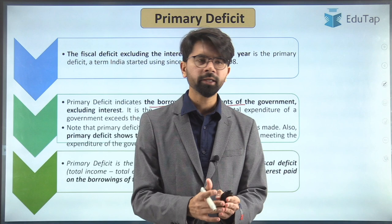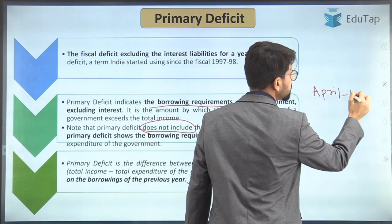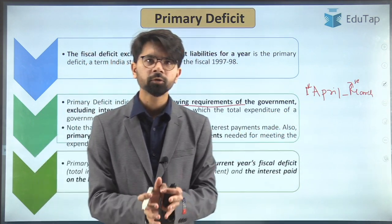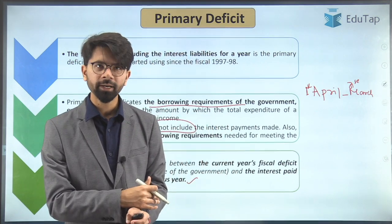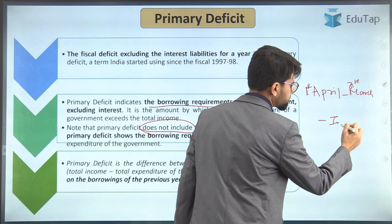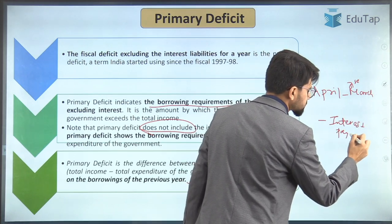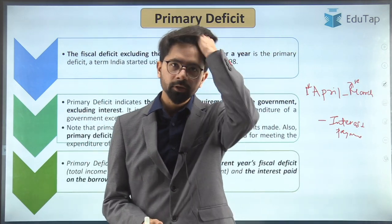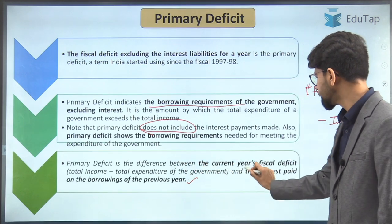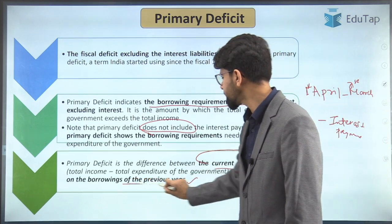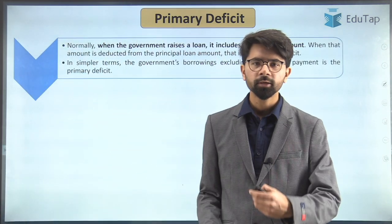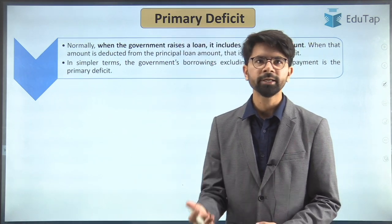The government resorts to borrowing in each financial year, which runs from 1st April to 31st March. In the upcoming year the government will resort to borrowing — that is the fiscal deficit — but borrowings might have been made in the previous year also. Whenever you borrow, you have to return the principal amount as well as the interest. That interest payment is excluded in primary deficit. We are calculating the borrowings that can be utilized for the expenditure of the government by discarding the interest payment. Primary deficit is the difference between the current year fiscal deficit and the interest paid on the borrowings of the previous year.